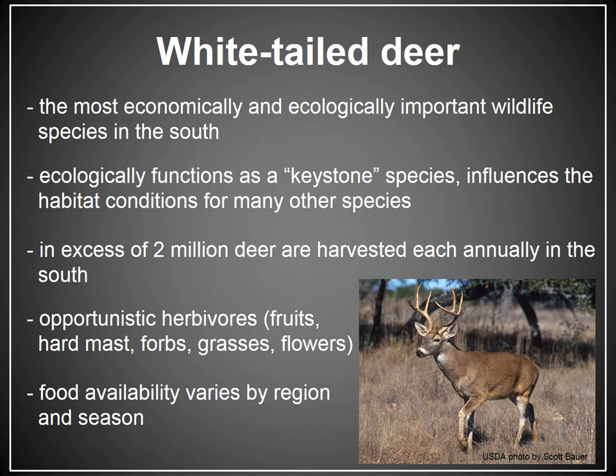White-tailed deer are relied upon heavily as a food source for hunters. We have essentially taken over the role of predator, as most of the natural predators of white-tailed deer no longer exist, or if they do exist, they exist in really small numbers. It's also important to recognize that white-tailed deer is a keystone species in many of these ecosystems — meaning that the presence of white-tailed deer and the changes they cause within their ecosystems are important for other species as well, and other species rely on their presence to survive.